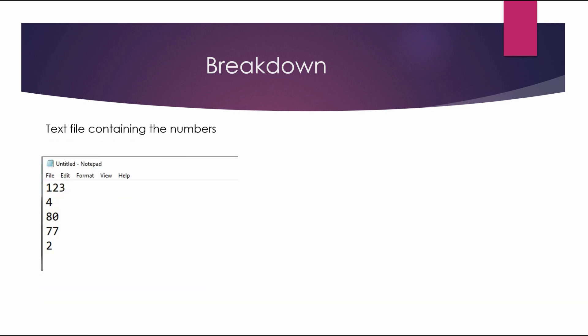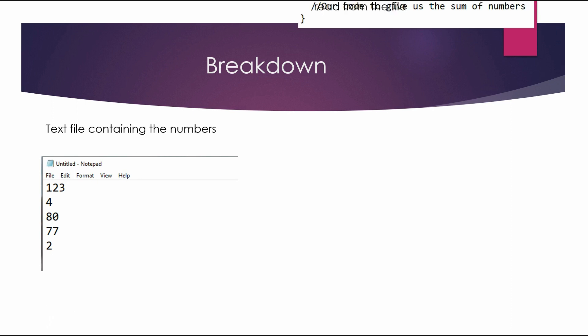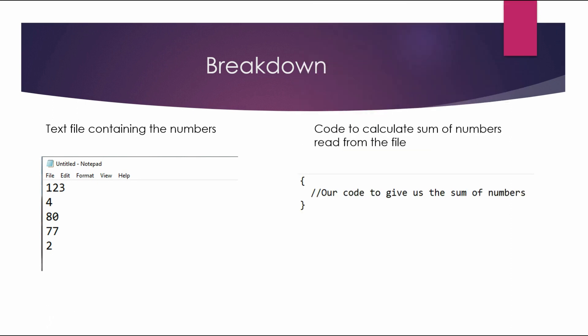So imagine that we have this text file here. It has five numbers: 123, the number 4, the number 80, the number 77, and the number 2. What we're going to need to do is write code that is actually going to read from this file and eventually give us the total of all the numbers in this file.